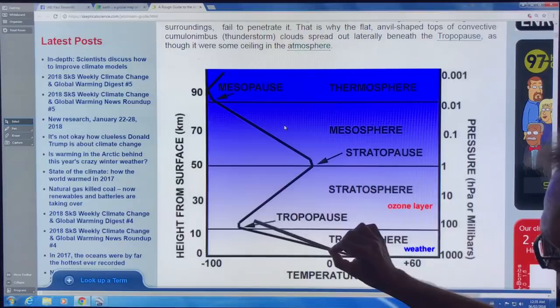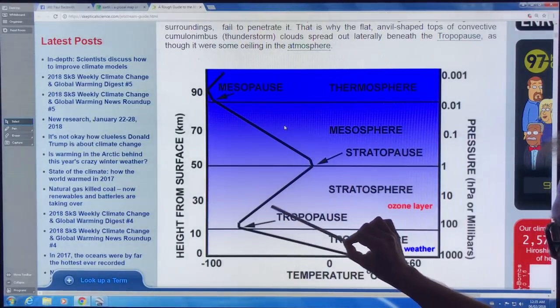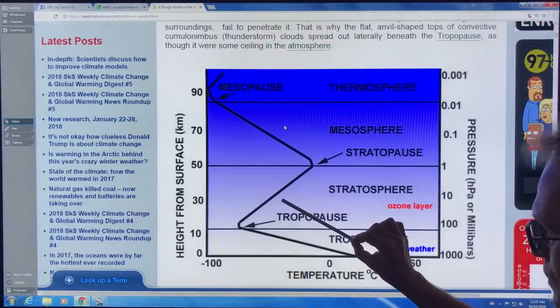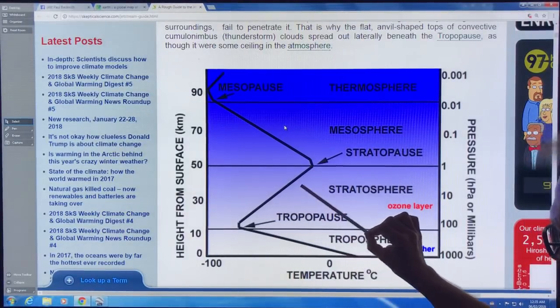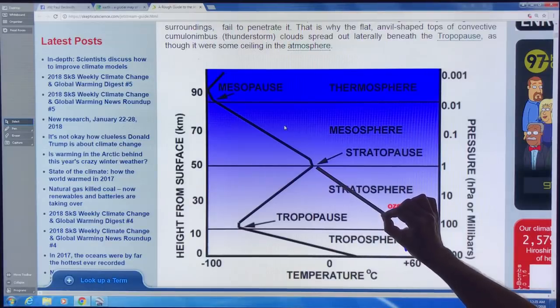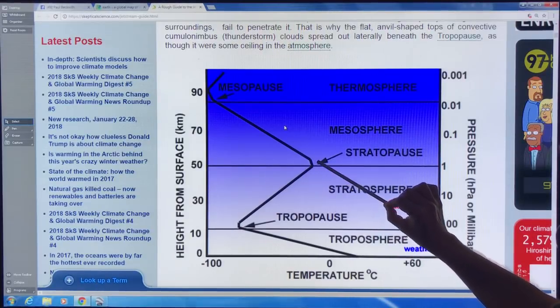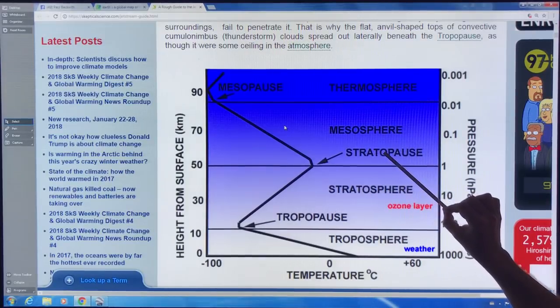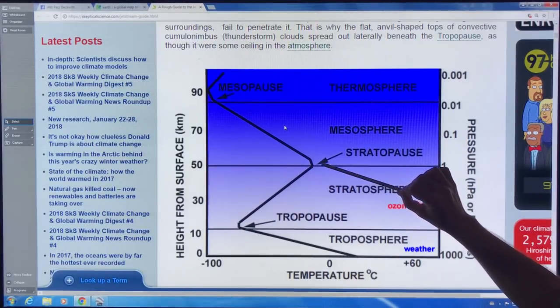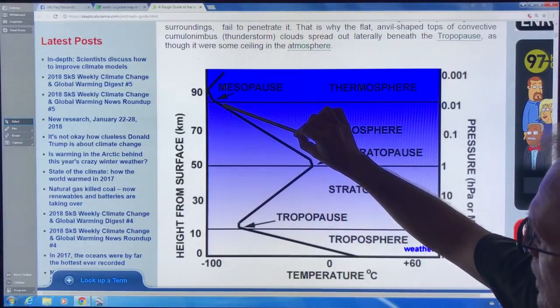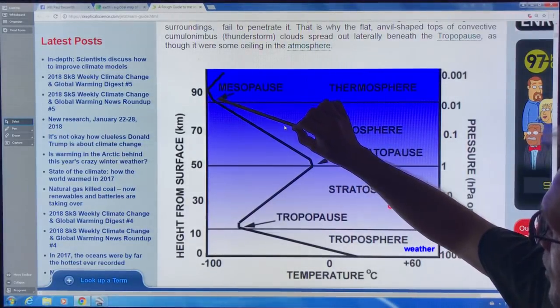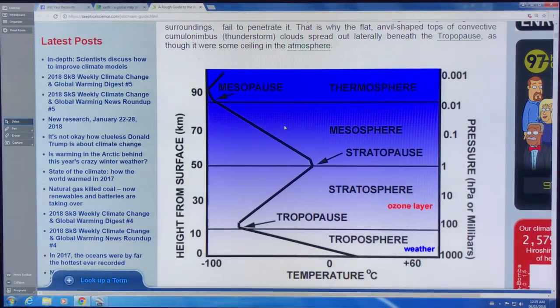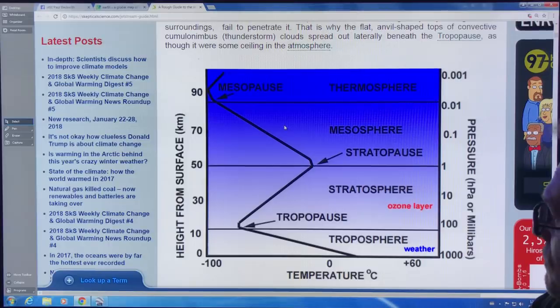The temperature increases as you go up into the stratosphere. This is where the ozone layer is. The reason why the temperature increases is gases in this region like ozone absorb energy from the sun, absorb the UV and heat up. Then where the temperature flattens off again with altitude, it's the stratopause, which is the top of the stratosphere. Then we have the mesosphere—the temperature drops again—and then we have the thermosphere. So those are the main levels of the atmosphere.